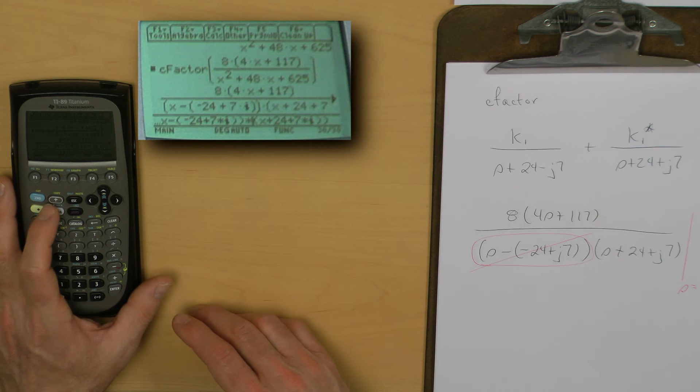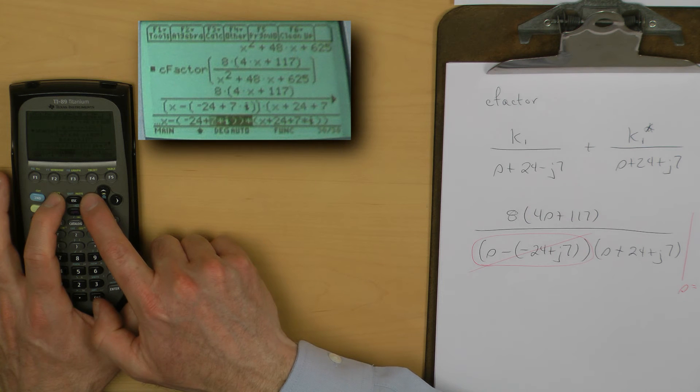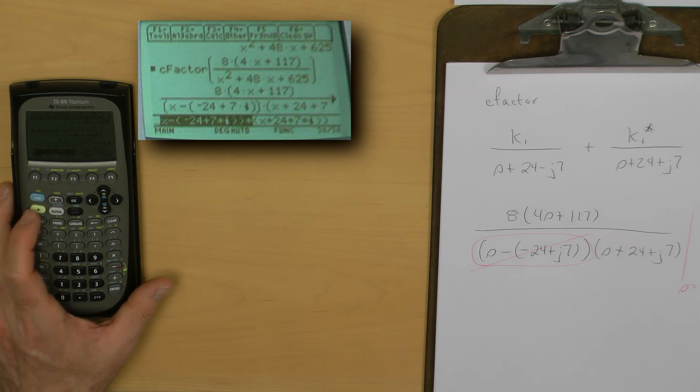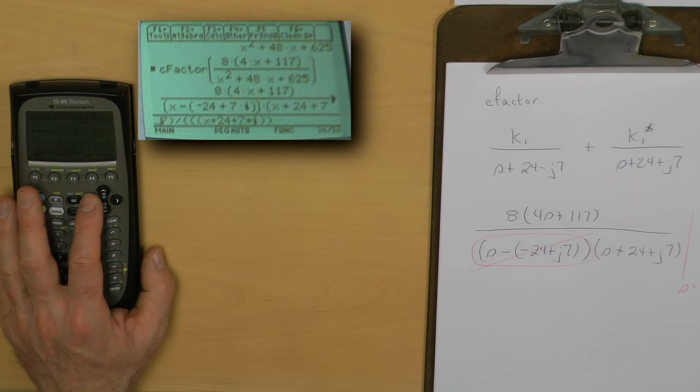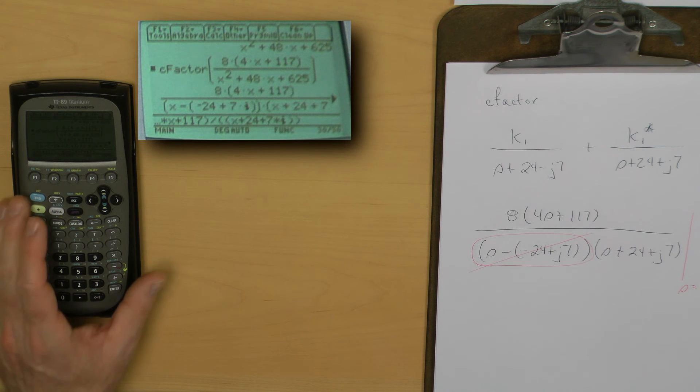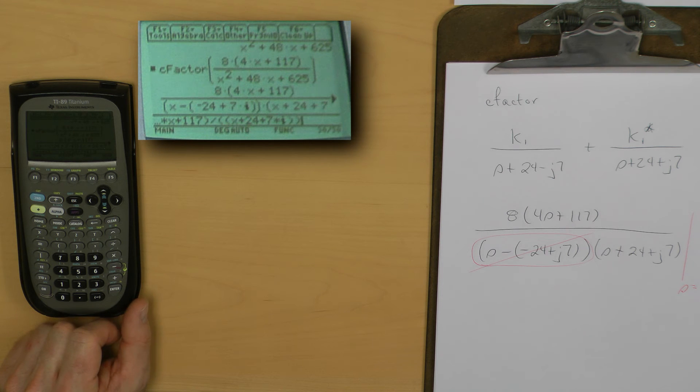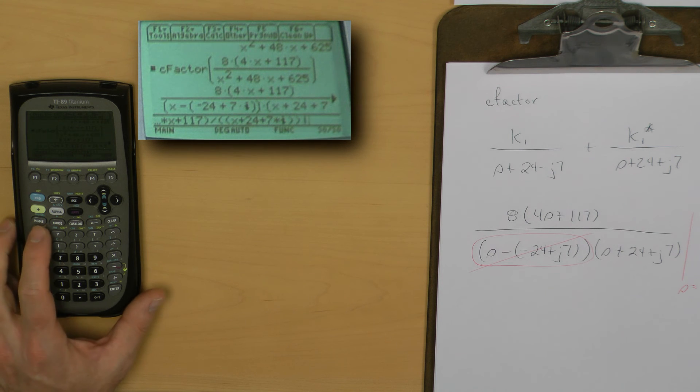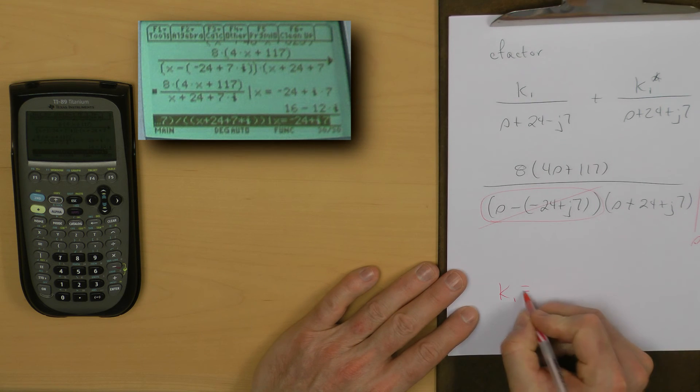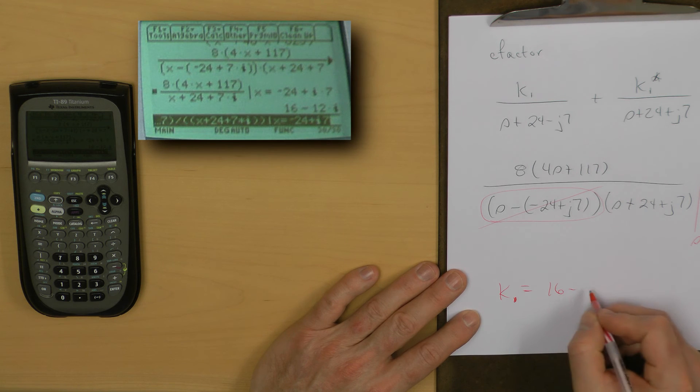I'm going to clear this input command line. I'm going to go up and grab the result and enter that. Now what I want to do is actually scroll over and cut out this piece that is at S plus 24 minus J7. To do that, I'm going to lock on my highlighter with the up arrow key and scrolling over with the left cursor. Now I want to cut that out, so it's the green diamond second. I'll eliminate that last parenthesis. I will now go to the far right with the second right arrow. What I want to do is now evaluate that expression when X is equal to minus 24 plus J7. That's the vertical bar, and now I will say X equal to minus 24 plus I7 and hit enter. That now tells me that K1 as a coefficient is equal to 16 minus 12 I.